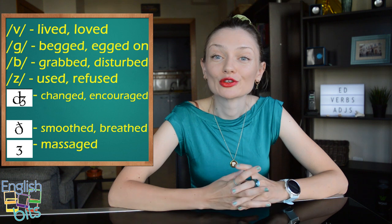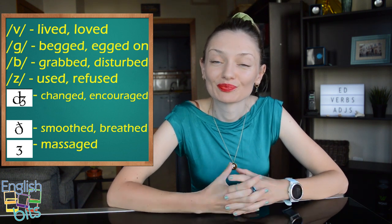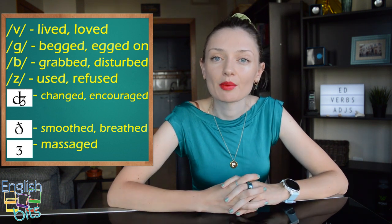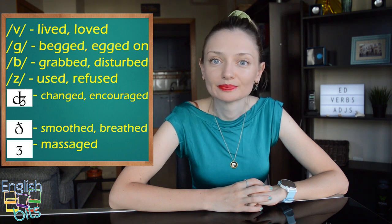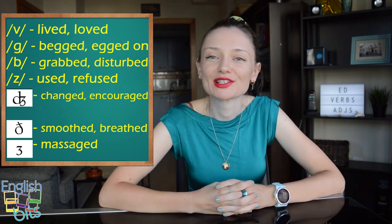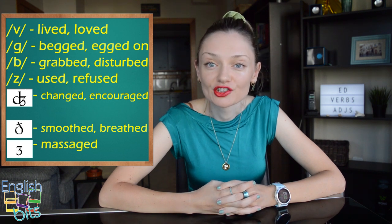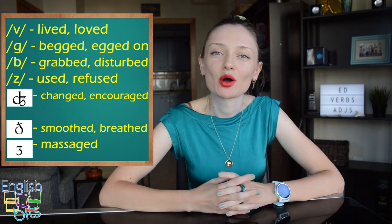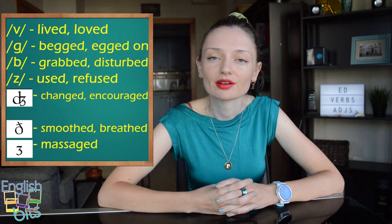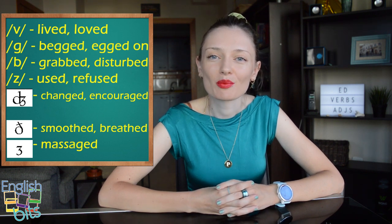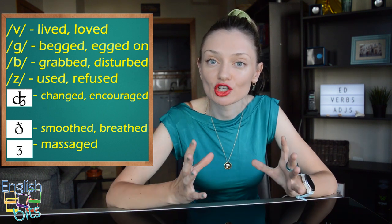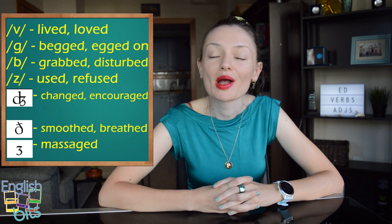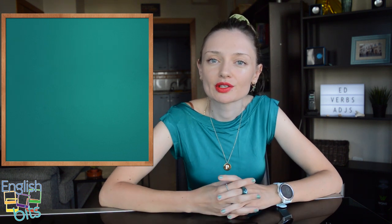The meaning of to egg on is to encourage. The sound B: for example, grabbed or disturbed. The sound Z: used or refused. The sound J: for example, changed or encouraged. Next sound — voiced TH: for example, smoothed or breathed. The sound J: for example, massaged.